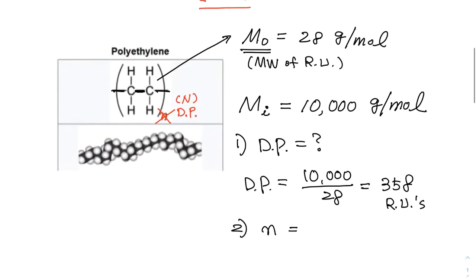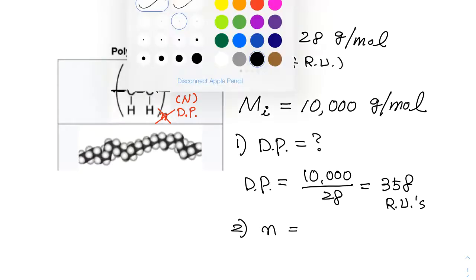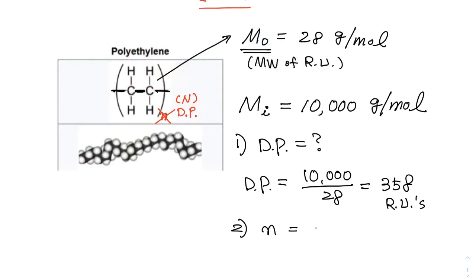So, therefore, I can use that idea that, okay, in this case, it's 2 times degree of polymerization. So, therefore, that number is 2 times 358, the sum to be 716 bonds.